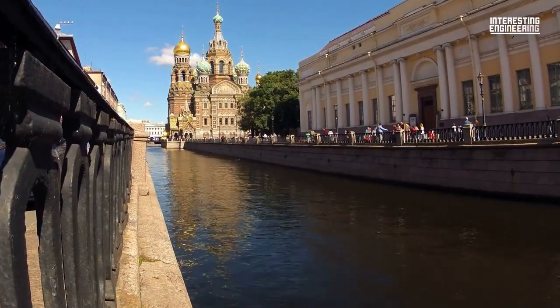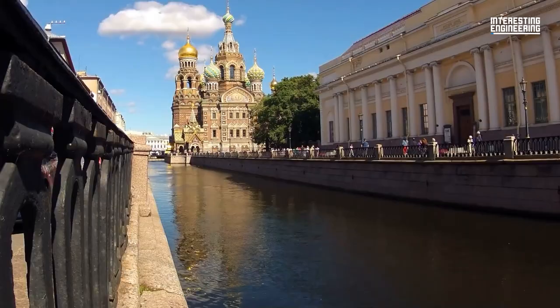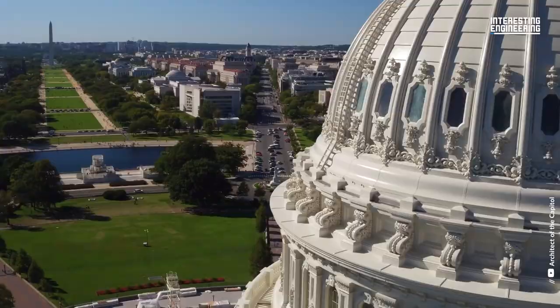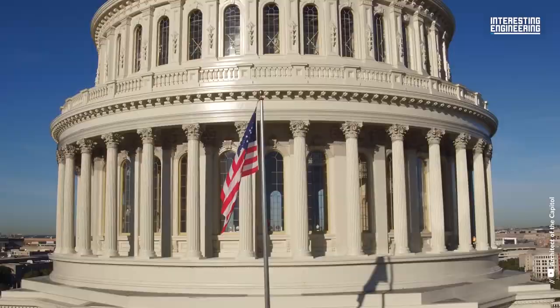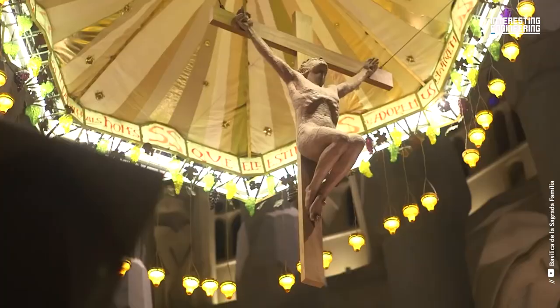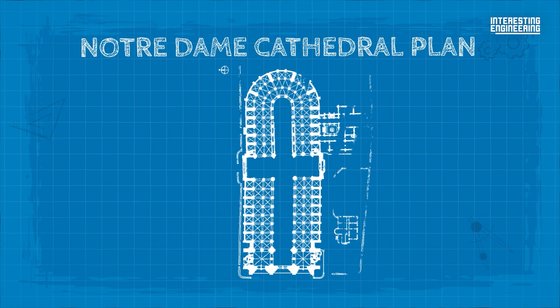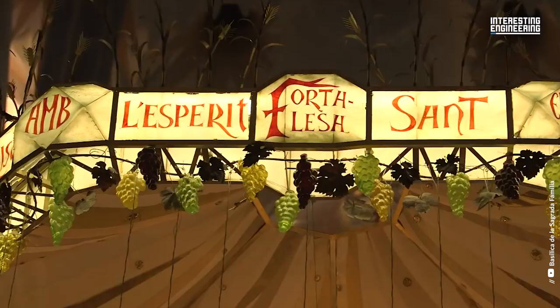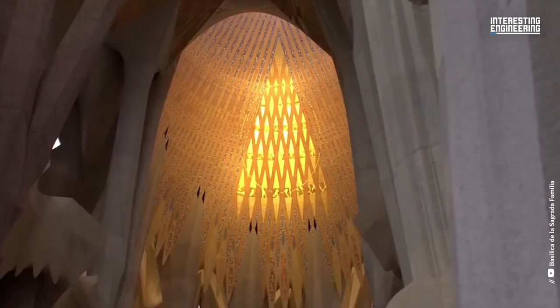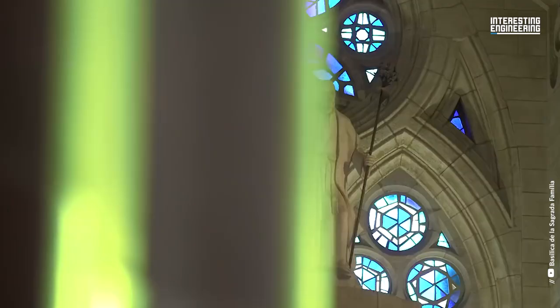Have you ever wondered if the bulbous domes of St. Petersburg, Russia are inspired by onions? Or maybe you have even stopped and thought about why many government buildings are modeled after classical architecture. We know crosses symbolize the Christian faith, but why do we integrate these symbols into our structures? Whether it be a feature or architectural element, let's take a look at some of the symbolism of architecture and its hidden meanings in buildings.